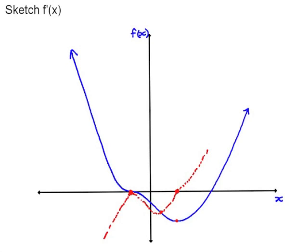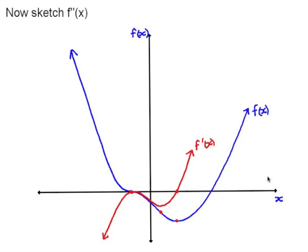So the graph of the derivative looks something like this. The original function is f(x), and the derivative — which is a graph of the gradient of the original function — is f'(x).